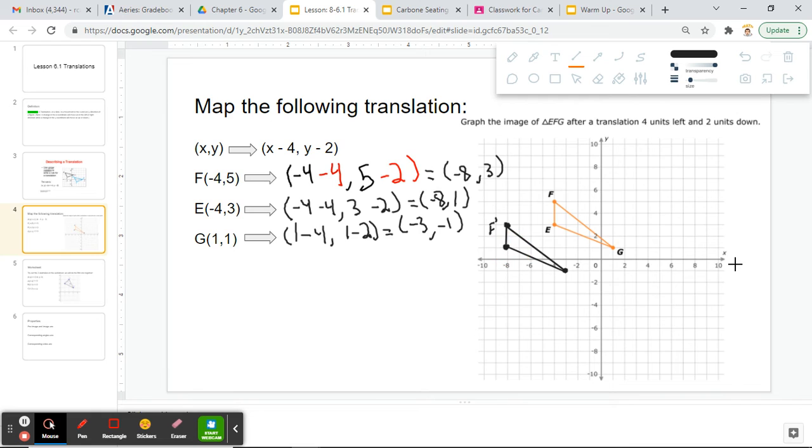Now we have a new figure here with points F prime, E prime, G prime. Notice how it looks exactly the same as my old figure. That's something that's true with translations or slides. Whenever we make a new translation or a new figure, our figure is going to be congruent or the same as our original figure. It would look exactly the same, just slid down in the bottom left direction.